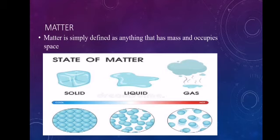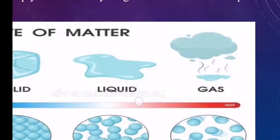What is matter? Matter is simply defined as anything that has mass and occupies space. Our body as well as all the things around us are examples of matter. In chemistry, we study all types of matter. There are three types of matter: solid, liquid, and gas.